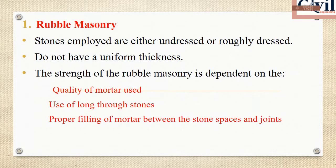In rubble masonry, stones are used undressed or roughly dressed, not in uniform sizes. The thickness of the structure and strength of the main elements are important considerations, along with the quality of the mortar and the use of long through-stones.